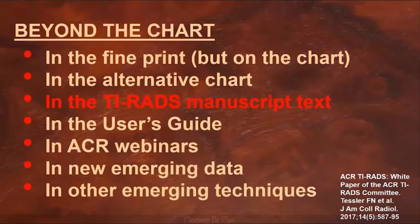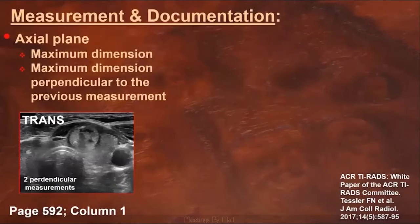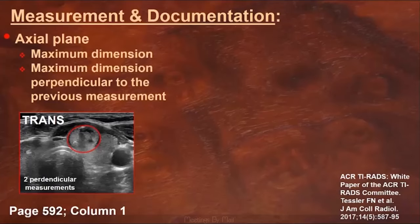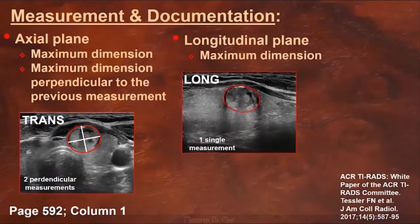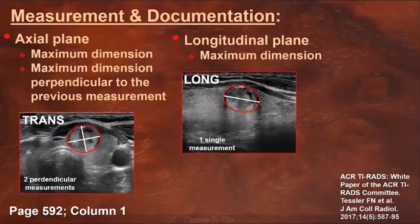There's a lot of valuable information in the TI-RADS manuscript that doesn't appear on the chart. Nodules can be measured in many ways, but TI-RADS describes one specific approach. First, you determine the orientation of the nodule in the axial plane and take two measurements: the maximal dimension in the long axis of the nodule, and then the maximum dimension perpendicular to the first — these qualify as your transverse and AP measurements. Repeat that process in the longitudinal plane, but only measure the maximum dimension, which qualifies as your craniocaudal dimension. Many outside scans submitted for consultation at my institution use TI-RADS but don't follow this approach for measurements.